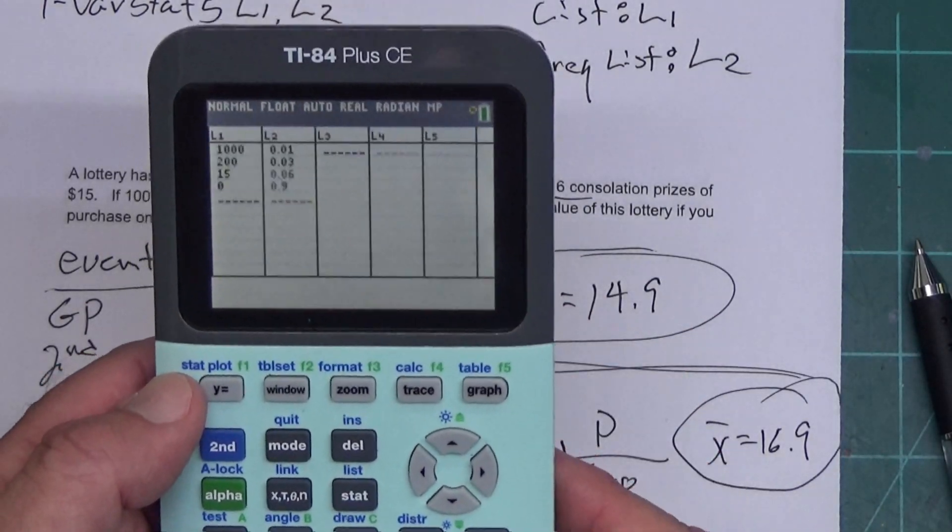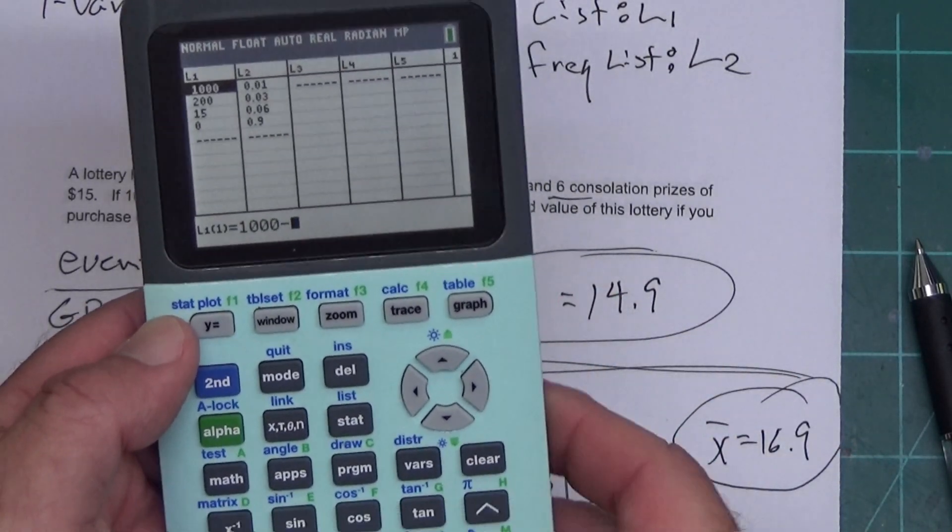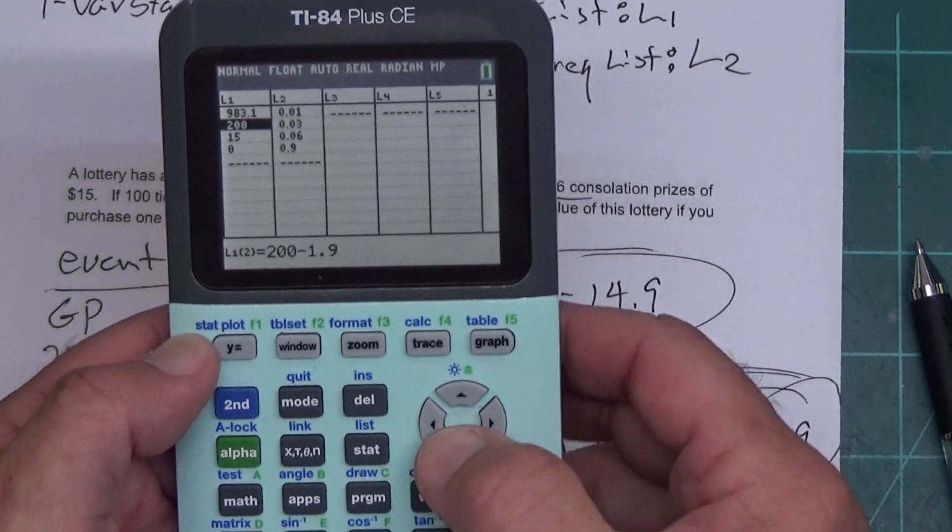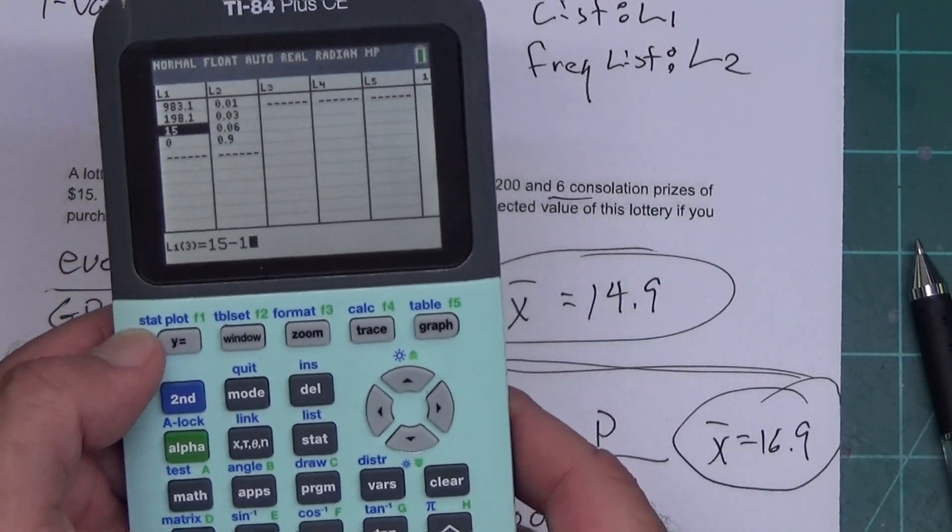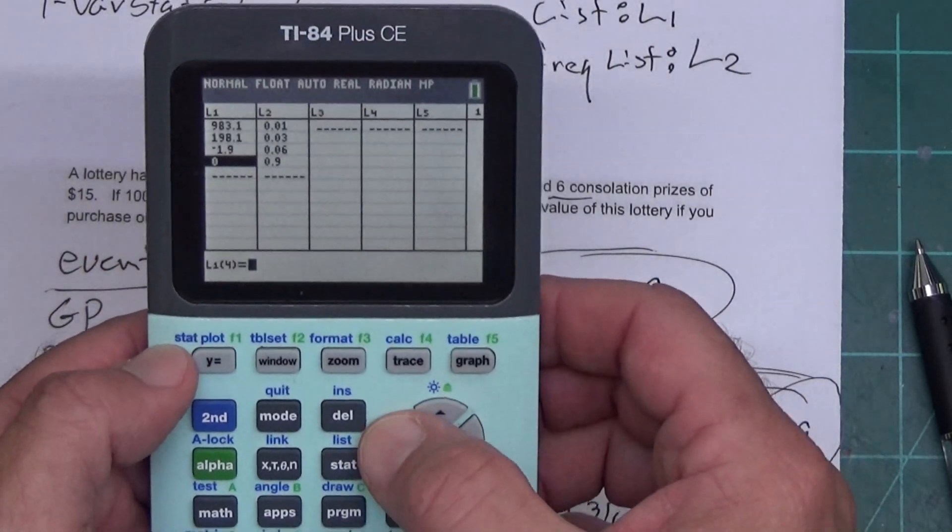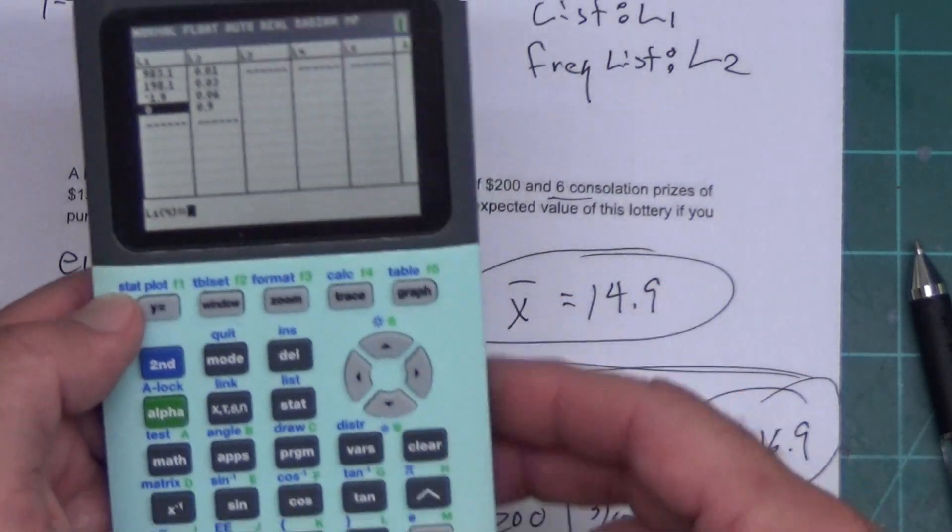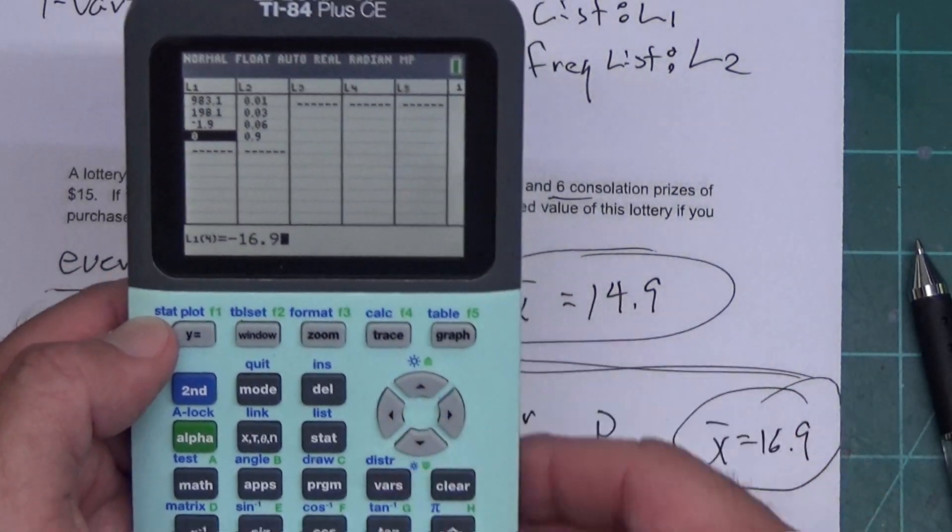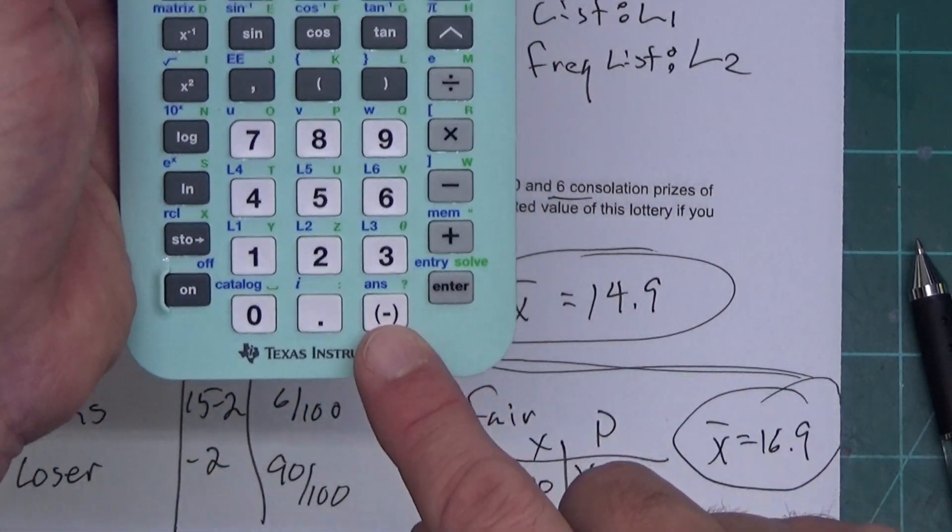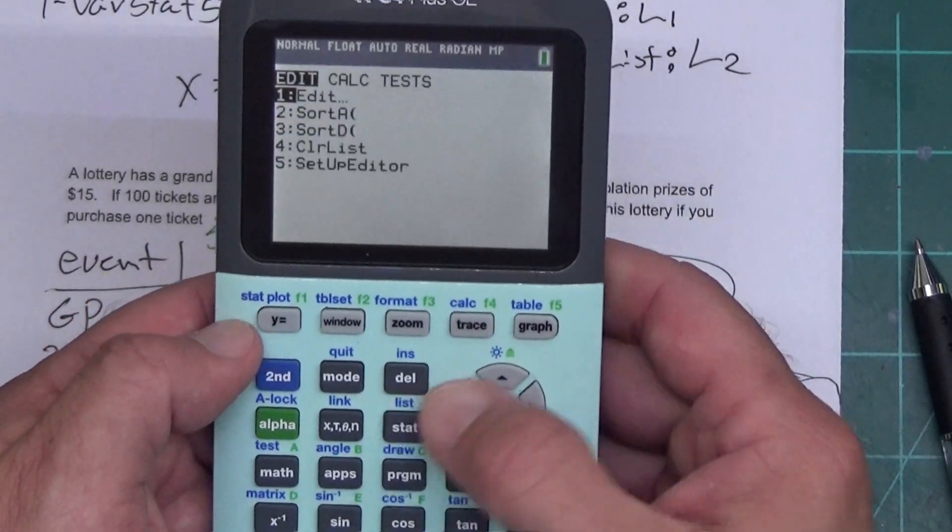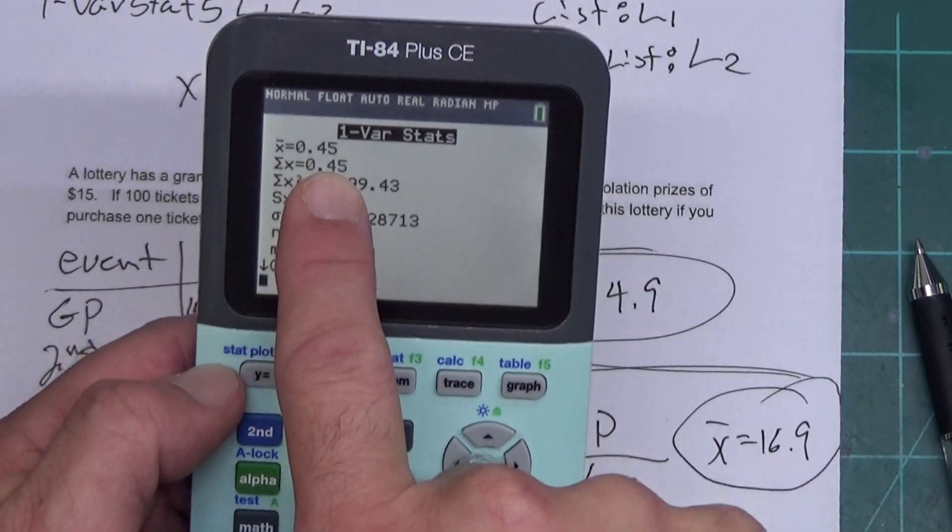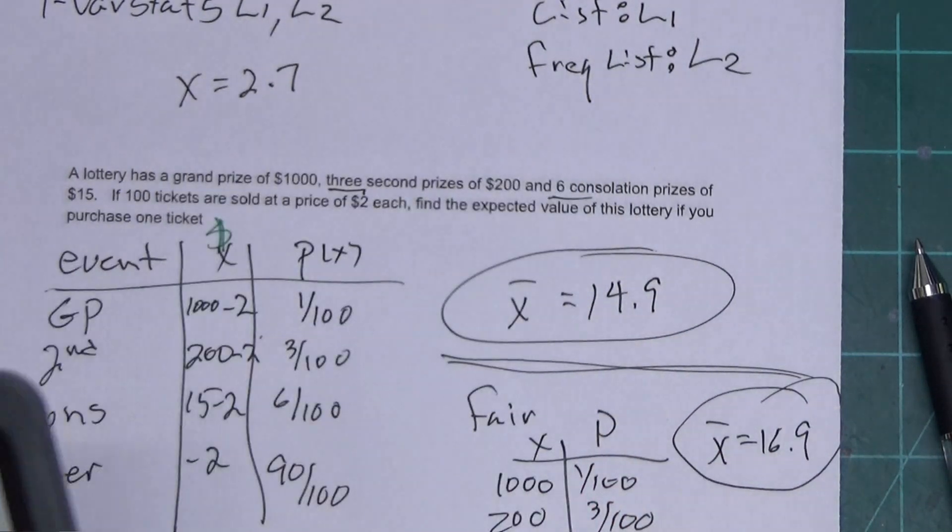I can press STAT, hit Enter. I can do 1,000 minus 16.9, 200 minus 16.9, 15 minus 16.9, and then negative 16.9, because we had to pay that to play the game. And apparently I hit the wrong minus sign there. Make sure you hit this minus sign, not that one. And then I press STAT over to CALC. Press Enter. You do the L1, L2 on the old 84 again. And I get pretty close to 0. I had to have mistyped something. But it gives the expected value 0.